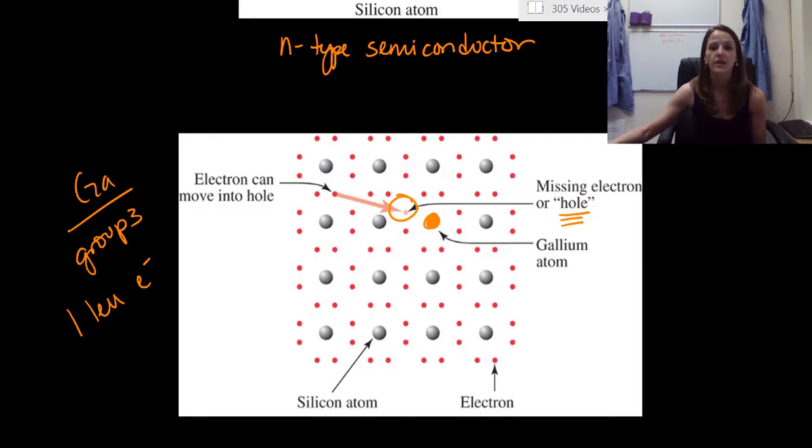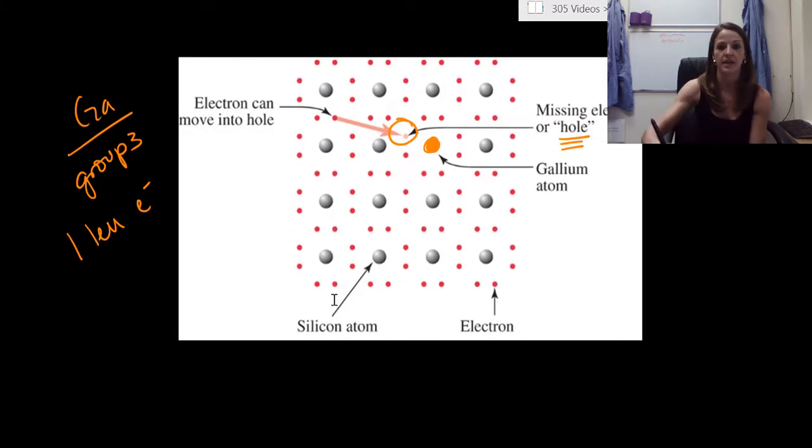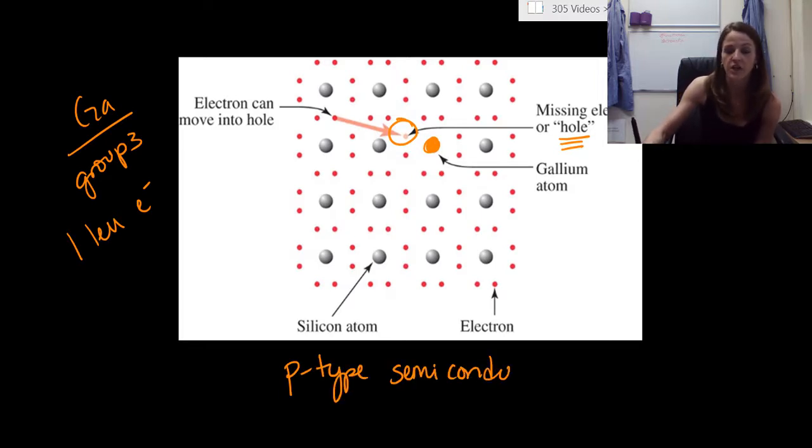So now, for gallium, instead of being an N-type semiconductor, this would be considered a P-type semiconductor. So any element that you add to silicon that has one less electron, so anything from group three is going to be considered a P-type semiconductor.